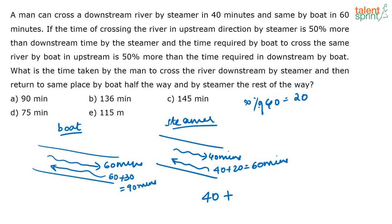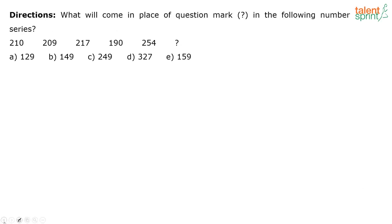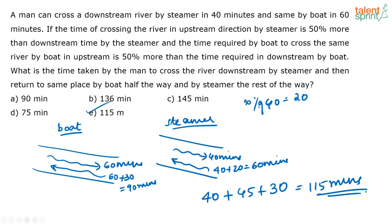Halfway by boat means he will take 45 minutes, and similarly 30 minutes by steamer for the other half. So the answer is 40 plus 45 plus 30, which is 85 plus 30, equal to 115 minutes. The correct answer is option E — 115 minutes.